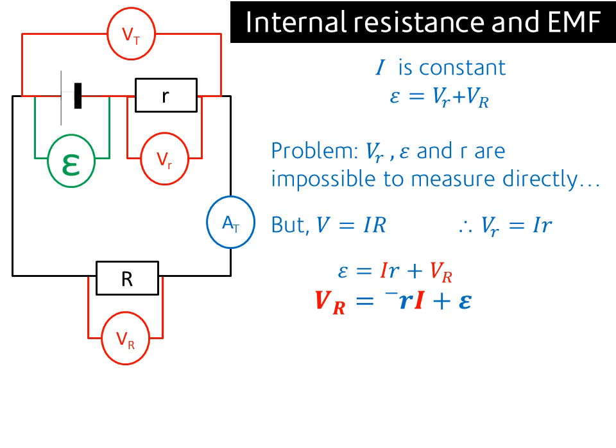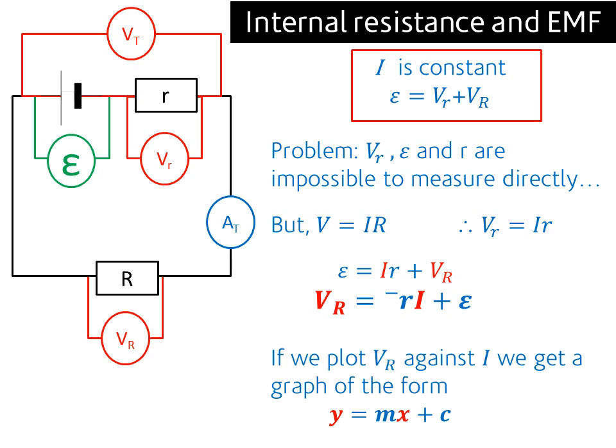And if we rearrange that formula, we can get this. Now as a physicist, when I see that formula, I'm really imagining y equals mx plus c. Because if we plot VR on the y-axis against I on the x-axis, we get a graph of the form y equals mx plus c,